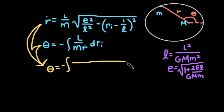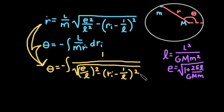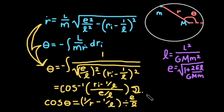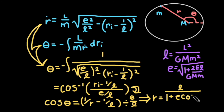We can plug r-dot into our previous equation for theta, which simplifies to the inverse cosine of r-inverse minus 1 over l, divided by e over l. Finally, we can plug r back into r-inverse and rearrange so that the cosine of theta equals r-inverse minus 1 over l, divided by e over l. Solving for r, we find that the distance between the two masses is l divided by 1 plus e cosine theta. This is the equation for an ellipse in polar coordinates, where l is the semi-latus rectum and e is the eccentricity of the ellipse.